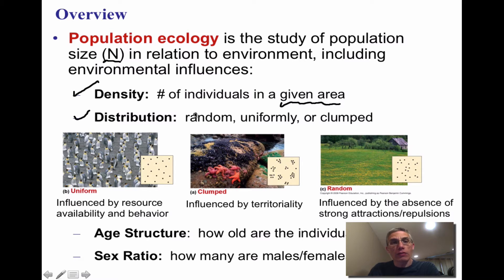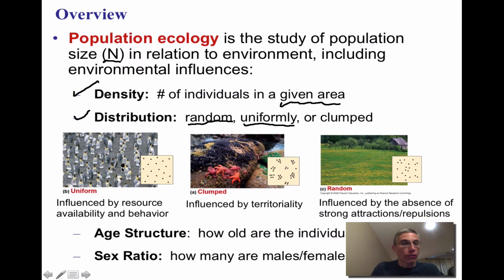There are three types of distribution in population ecology. The first is random distribution, represented by the grass in the picture on the far right. Random distribution is influenced by the absence of strong attractions or repulsions within the environment. The second is uniform distribution, represented by the penguins on the far left, influenced by resource availability and organism behavior. The third is clumped distribution, shown by the group of starfish clumped in one area.